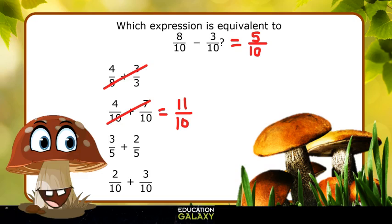3 fifths plus 2 fifths would be 5 fifths, or 1 whole, so that's not right. This last one says 2 tenths plus 3 tenths, which is 5 tenths. Bingo! There's our answer.